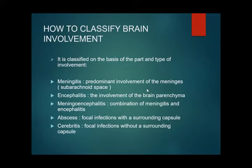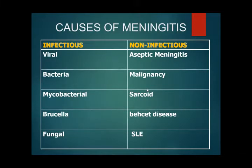The causes of meningitis can be divided into infectious and non-infectious. Infectious causes include viral agents — many viruses cause meningitis and encephalitis — as well as bacteria causing acute bacterial meningitis, and mycobacteria, brucella, and fungal organisms which cause chronic meningitis. Non-infectious causes include aseptic meningitis, which can be caused by viruses, some drugs, and malignancy — also known as carcinomatous meningitis.